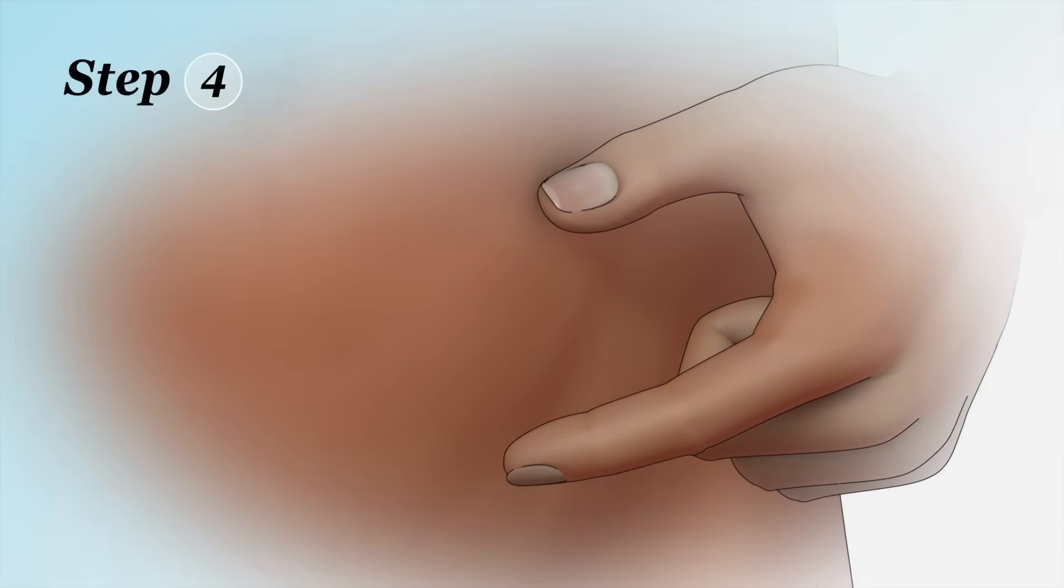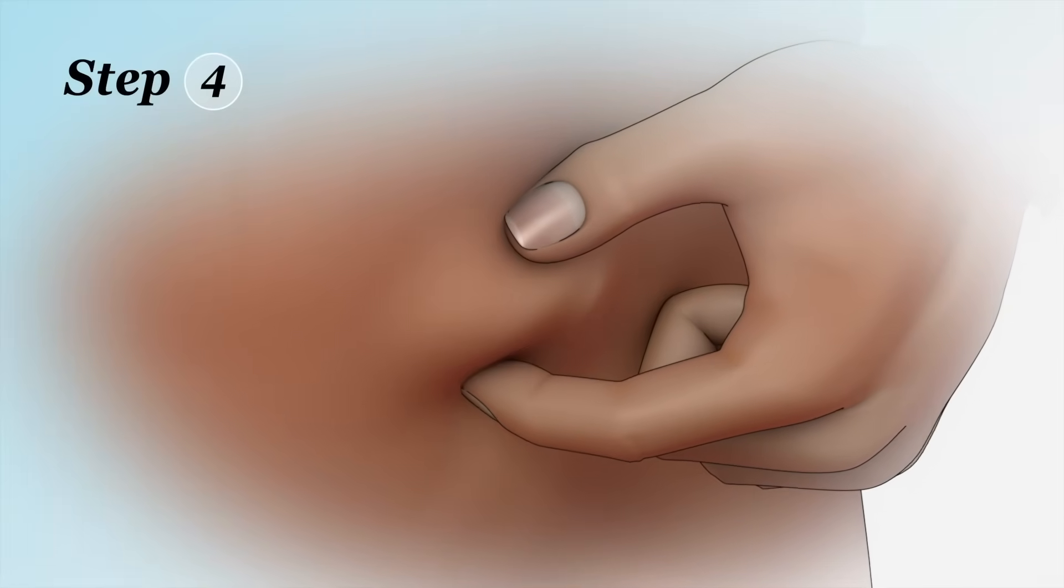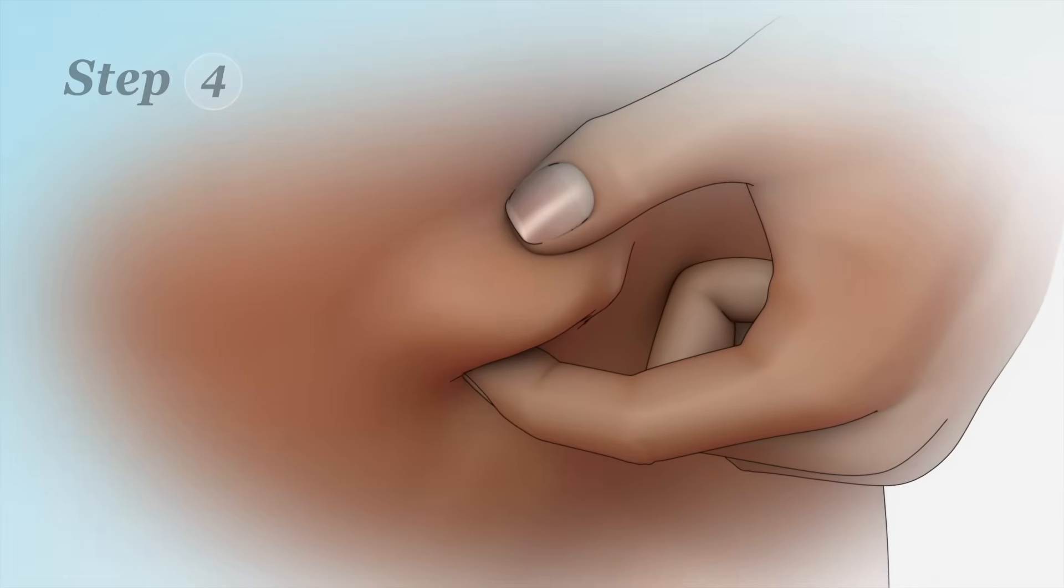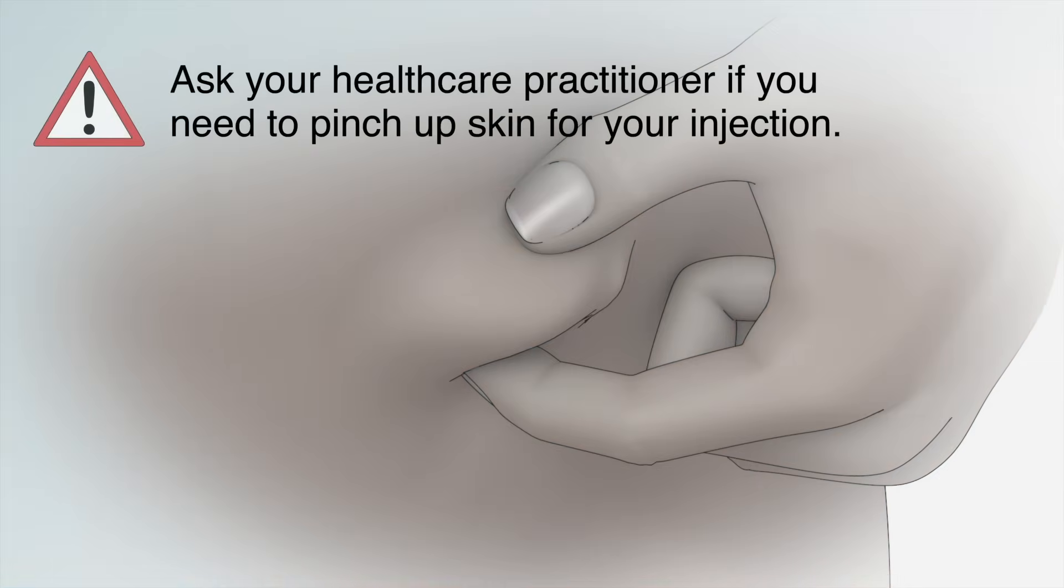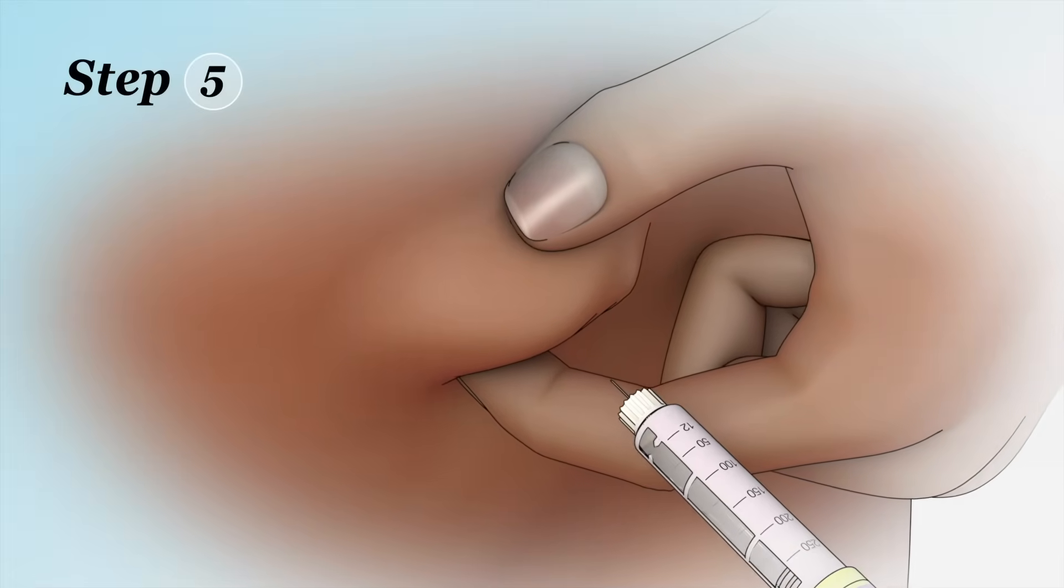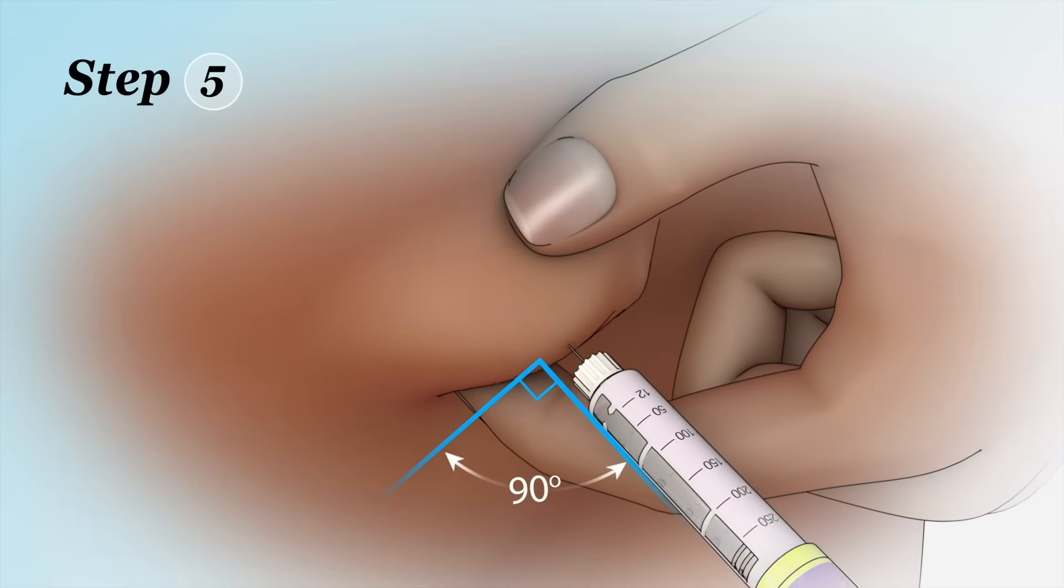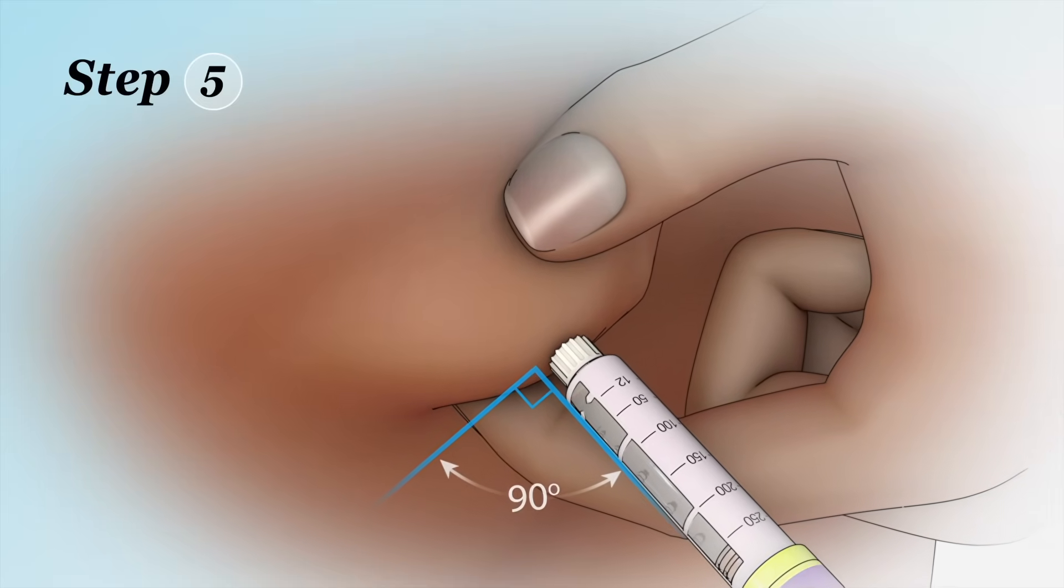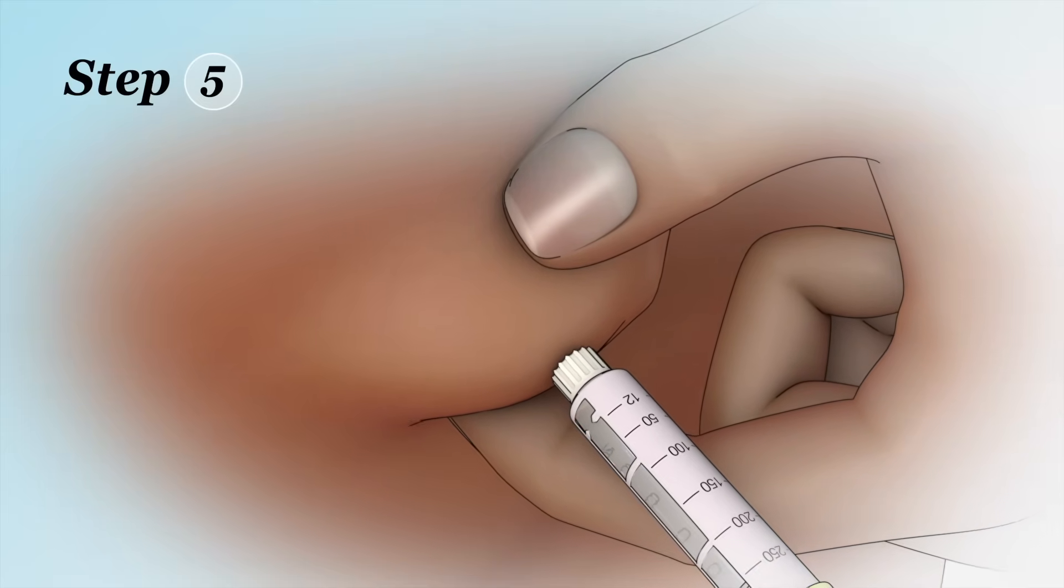Step 4: You may need to pinch a fold of skin in the cleaned injection spot to make sure the needle will only go into the fat layer under your skin. Ask your healthcare practitioner if you need to pinch up skin for your injection. Step 5: Quickly insert the pen's needle straight into your skin at a 90-degree angle. Make sure the whole needle enters your skin.